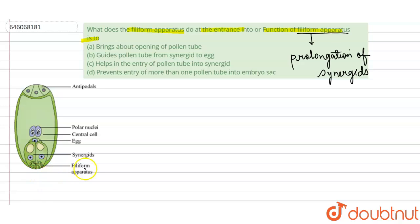This is the whole embryo sac here. The diagram here is of the embryo sac, and when we talk about this filiform apparatus, as you can see synergids, they are the extension of the synergids.